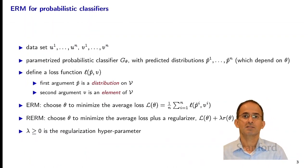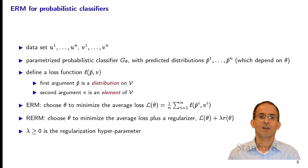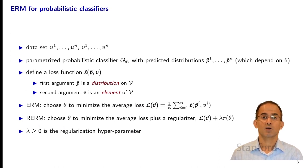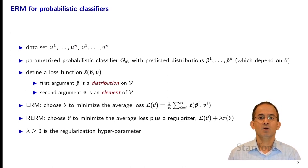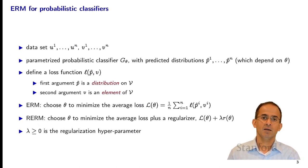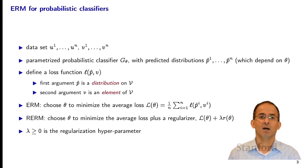Our dataset consists of n points, u1 through un and v1 through vn. We're going to produce corresponding distributions p-hat 1 through p-hat n, which are our predictions at each of those data points u1 through un. Then we're going to compare our predictions p-hat i with the true value v_i. In order to do that, we need a loss function.